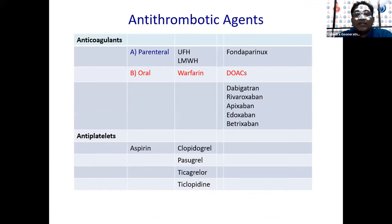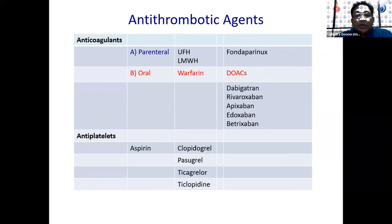What antithrombotic agents might the patient be on? Anticoagulants can be parenteral — unfractionated heparin, low-molecular-weight heparin, or fondaparinux — or oral: warfarin or the DOACs. The DOACs include the antithrombin agent dabigatran, or the direct anti-Xa inhibitors: rivaroxaban, apixaban, edoxaban, and betrixaban. We have rivaroxaban and apixaban available here and many patients are on these two drugs, so we need to know about them. Antiplatelets include aspirin and the P2Y12 inhibitors — clopidogrel, prasugrel, ticlopidine, and ticagrelor. Patients may be on one of these or a combination prior to surgery.